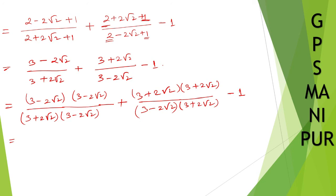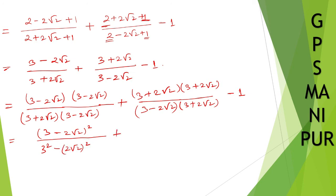Multiplying: the first numerator becomes (3 minus 2√2) squared. The denominator uses (a plus b)(a minus b), giving 3 squared minus (2√2) squared. The second numerator becomes (3 plus 2√2) squared, divided by the same denominator 3 squared minus (2√2) squared, minus 1.